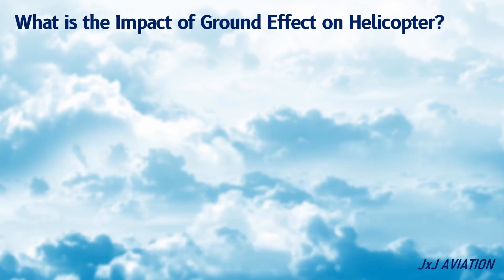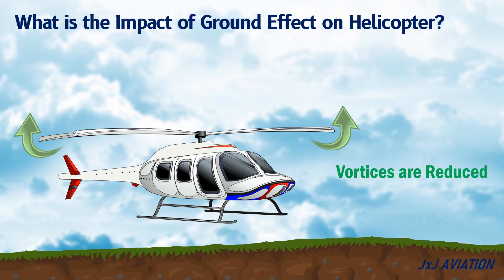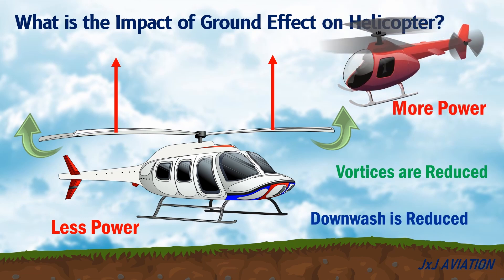Impact of ground effect on a helicopter. Similar to an aircraft, when a helicopter is close to the ground, the vortices are reduced on the main rotor, causing an improvement in lift. Again, the downwash is reduced, which straightens the lift vector. This means that less power is required for hover when close to the ground, compared to hover at higher altitudes.